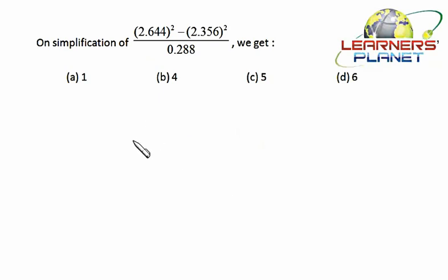Now this question is also an application of a square minus b square, so it's a minus b times a plus b. What is a minus b? It's 2.644 minus 2.356, that is 644 minus 356, which will be 288. So we are left with 2.644 plus 2.356. So 2 and 2, 4, plus 644 plus 356 will produce 1, so it's 4 only.